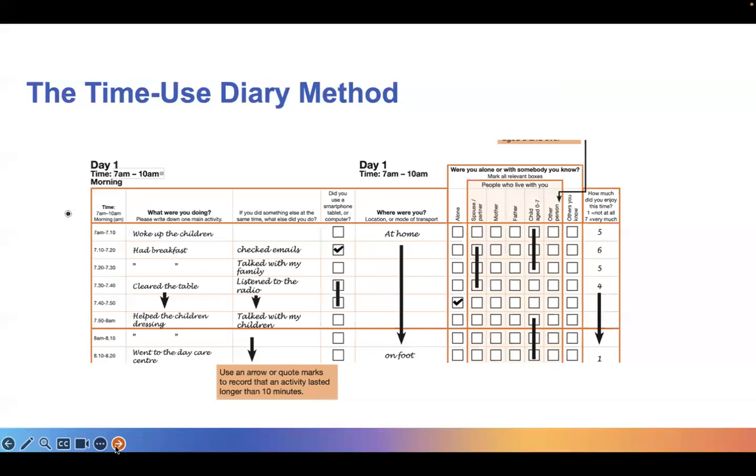The next column is called the main activity column. And this is where respondents describe their main activities in their own words. They also have the opportunity to report any simultaneous activity in the secondary activity column, which is just next to the main activity one. For example, you can see that at 7:10 in the morning, the diarist was having breakfast and also reported checking emails at the same time. This level of detail cannot be attained with conventional social survey questions.